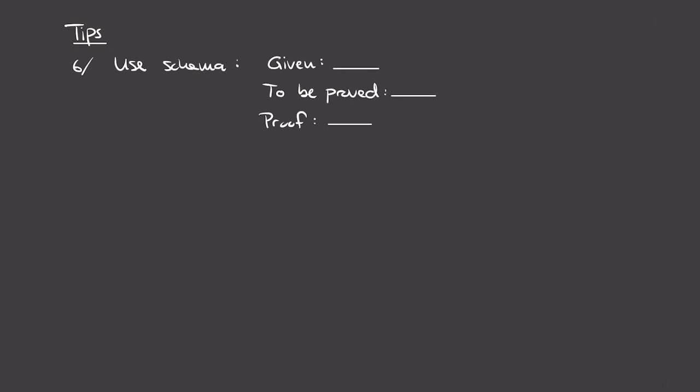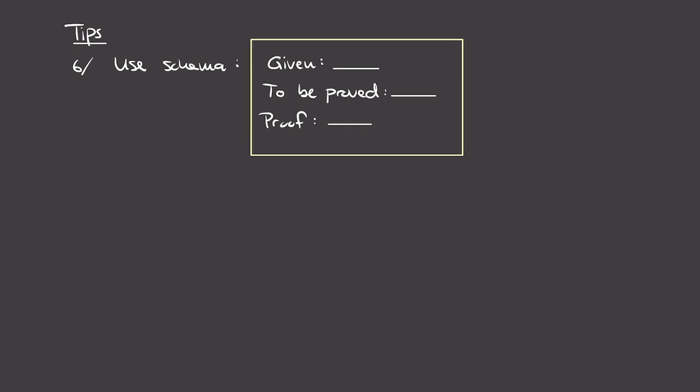Now I'll follow up with some tips that might be helpful when you're starting out writing proofs. The first tip is to use a three-part schema: under 'given' write down all your assumptions; under 'to be proved' write the statement you need to prove; and then start writing your proof. This is especially helpful in the beginning when you haven't completely gotten used to all the proof rules.